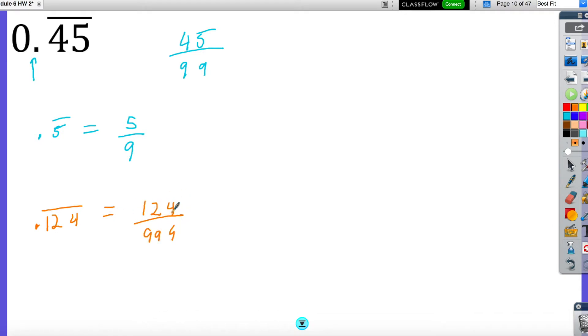There's three numbers that repeat over and over, so I put three 9s under it. You can only use this shortcut when it is decimal followed by the number that repeats. Decimal followed by the number that repeats.